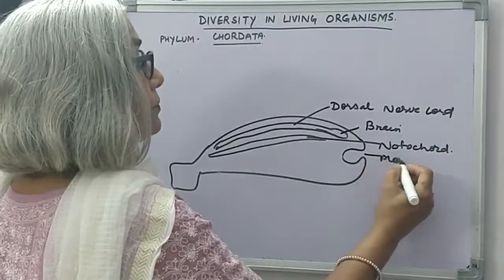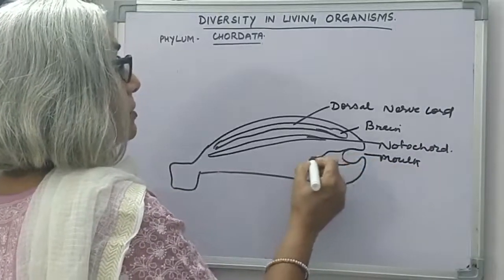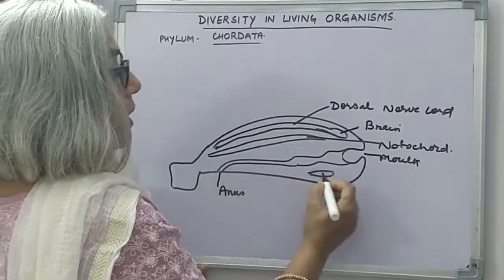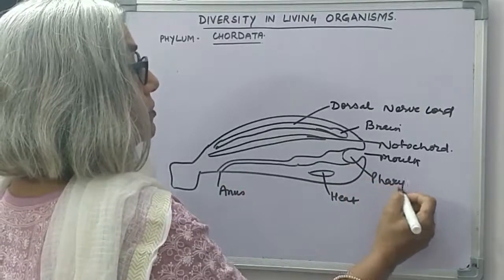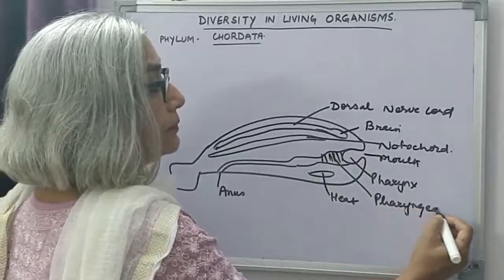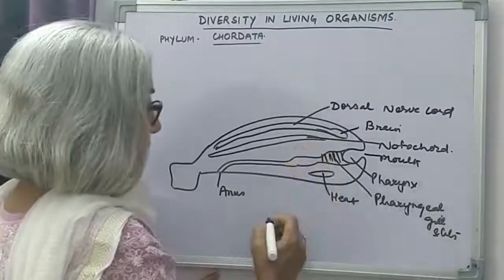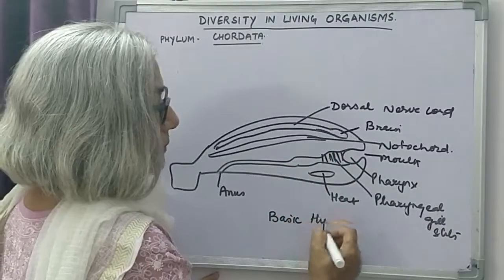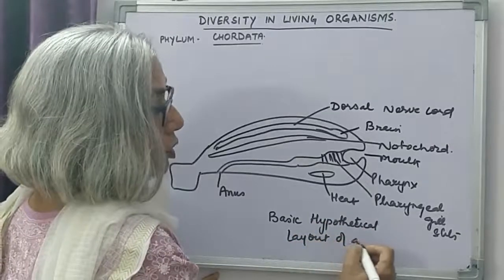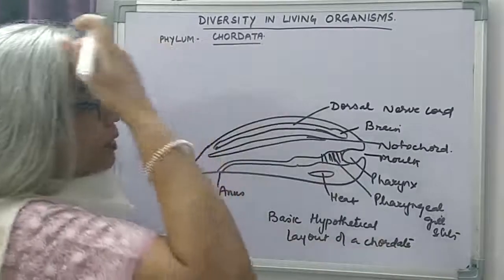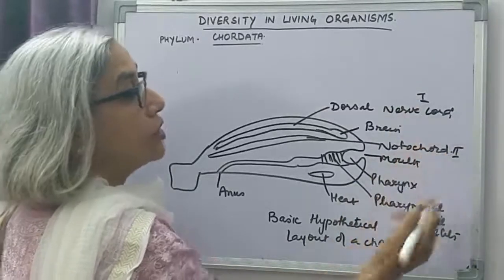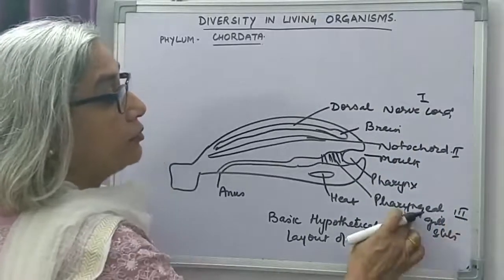This is the mouth, then the pharynx region, the intestine and this is the anus. Heart is present here, and these are the pharyngeal gill slits. So this is the basic hypothetical layout of a chordate. The three main characteristics are: the dorsal nerve chord, ventral to it is the notochord, and the third characteristic feature is the presence of pharyngeal gill slits.